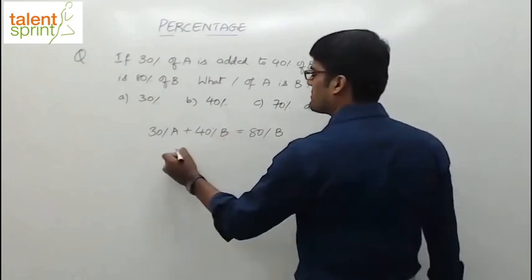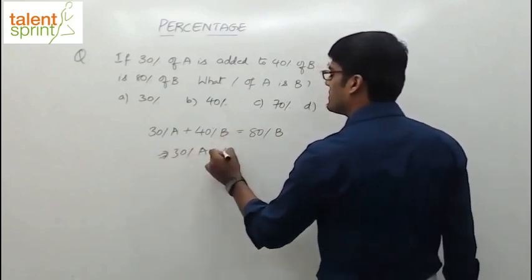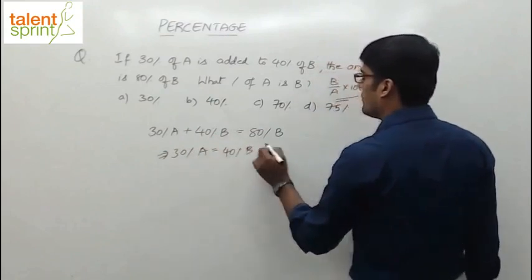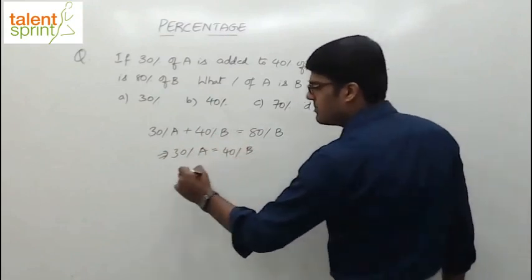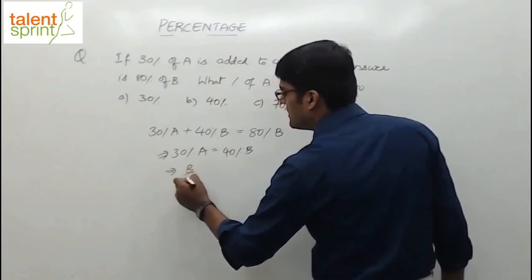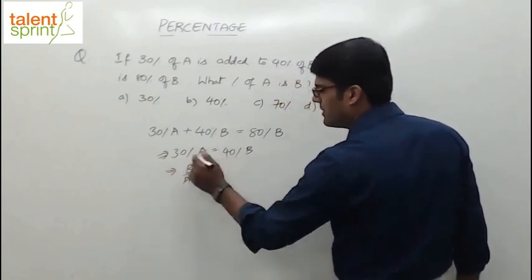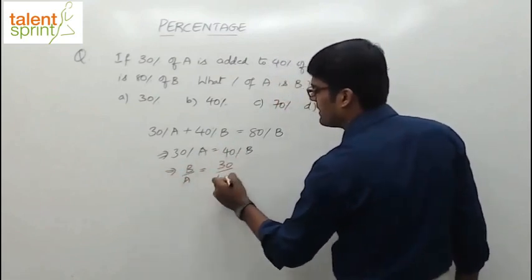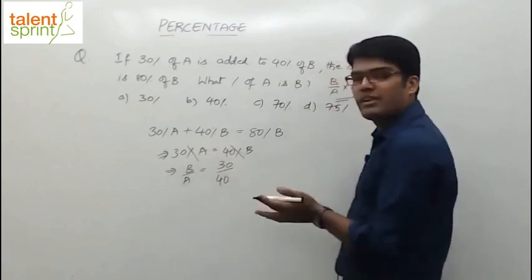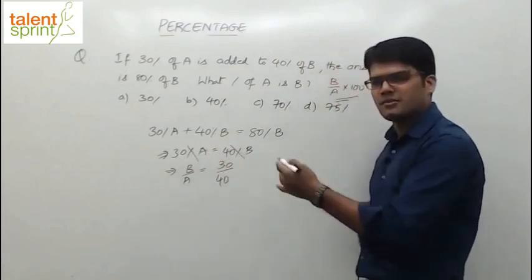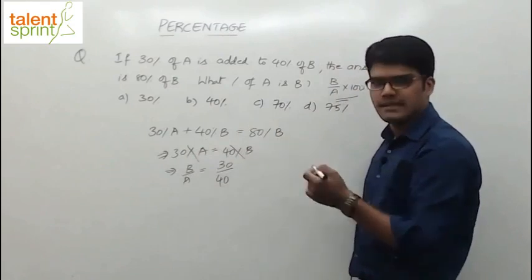30% of A plus 40% of B equals 80% of B, which implies 30% of A equals 40% of B. What do we want? B by A. So try to take B by A. From this we can say B by A will be equal to 30 by 40. The percentage gets cancelled on both sides. Don't worry about that. What is percentage? By 100. So by 100 on the left side, by 100 on the right side, it gets eliminated.